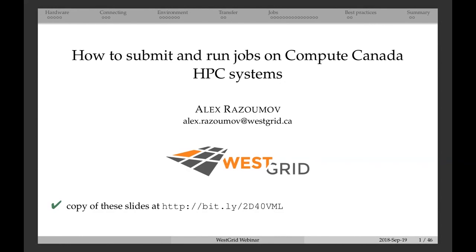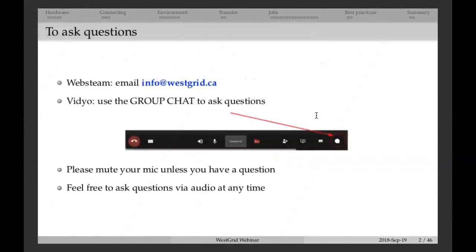This is the first Westgrid webinar this fall. We're going to have about eight or nine webinars this fall. The next one is actually tomorrow on expansion to the Abacus cloud system. The regular time for webinars is Wednesday at this exact time — 10 o'clock Pacific, every two weeks. The next regular scheduled webinar is in two weeks. A couple of housekeeping items before we proceed.